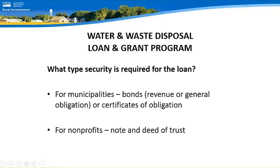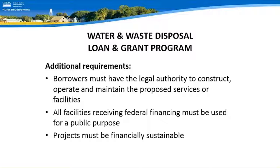We take different types of security for a loan depending on the type of applicant. For municipalities, they will issue bonds — either revenue bonds, general obligation bonds, or certificates of obligation — that we hold for the term of the loan. For nonprofit entities, we'll take a note and deed of trust for the term of the loan. Borrowers must also have the legal authority to construct, operate, and maintain the proposed services or facilities. All facilities receiving federal financing must be used for a public purpose, and projects must be financially sustainable — for instance, a sewer system must be sustainable by itself and not relying on water revenues.